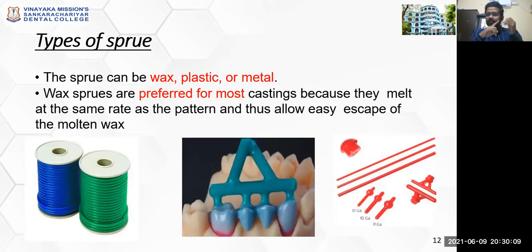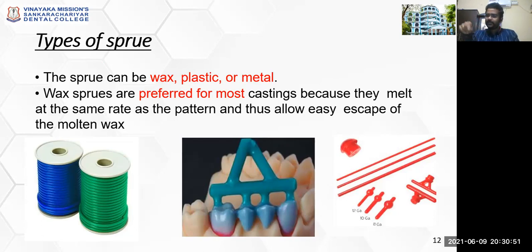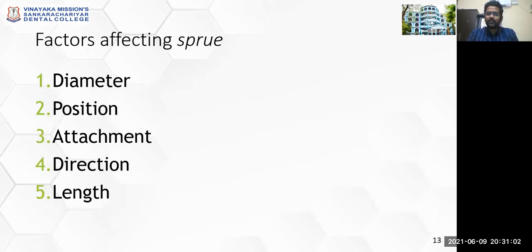There are different types of sprues available: wax sprues, plastic sprues, and metal sprues. Wax sprues are preferred for most castings because during burnout they melt and escape from the casting assembly very easily. When you use a plastic or metal sprue, once the wax coated around the plastic or metal sprue evaporates, the plastic or metal stays inside the casting assembly. Before the casting procedure you should invert your casting ring to remove the leftover plastic or metal used for sprues; if you forget, it will result in a defective casting.